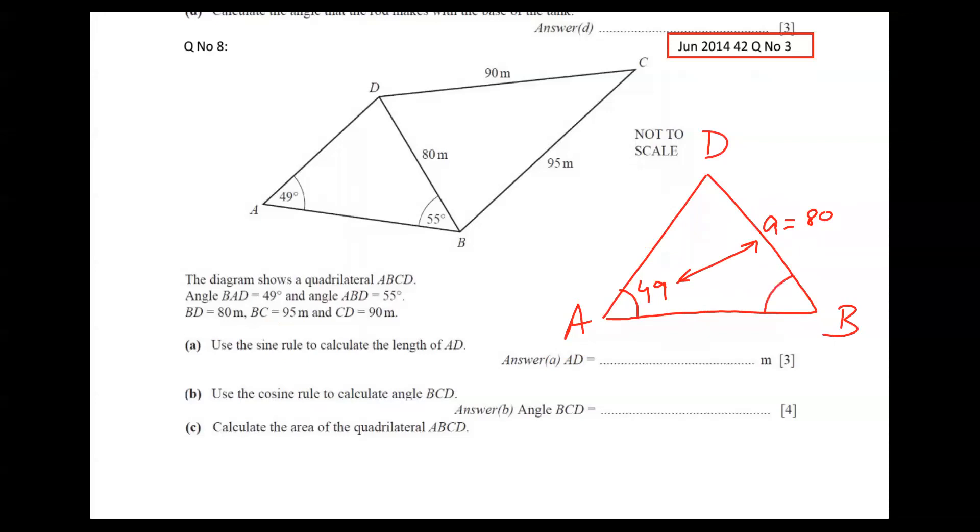One pair is given. A pair means opposite side and angle. Whenever one pair is given, we are eligible to use sine rule. So let's start. Here we're given 55 degrees, and we need to find AD. AD is this length. So in front of B, this side is called small b. So small b is my question.